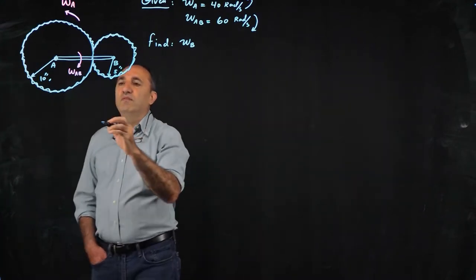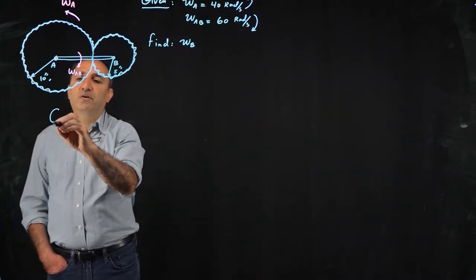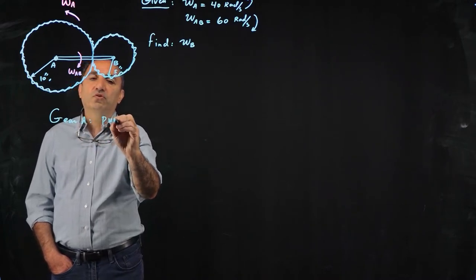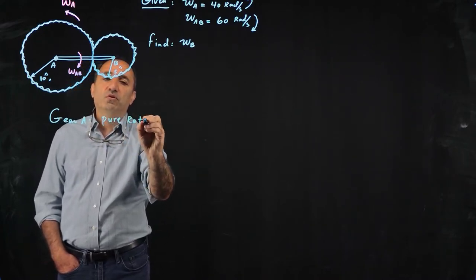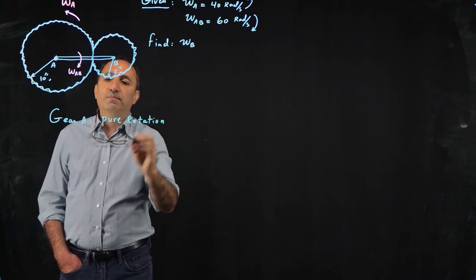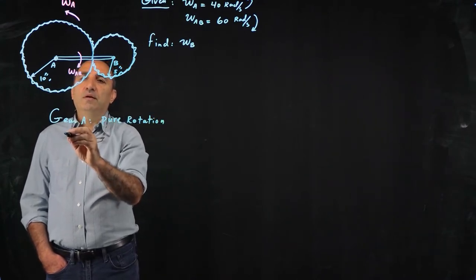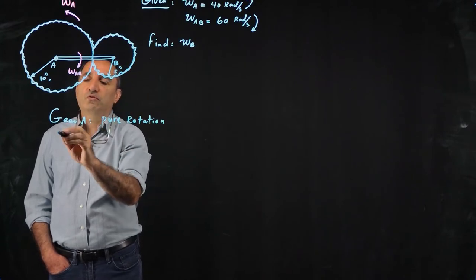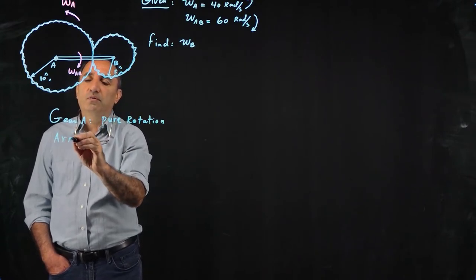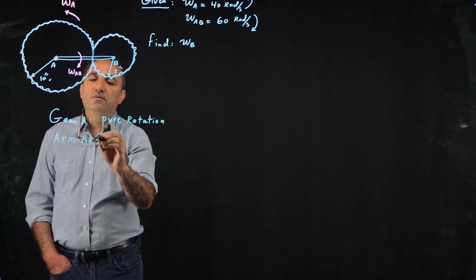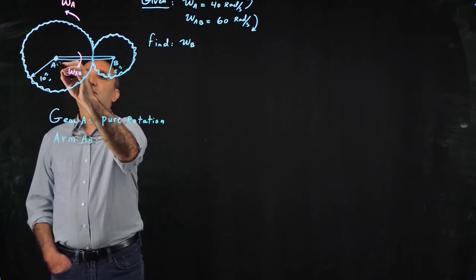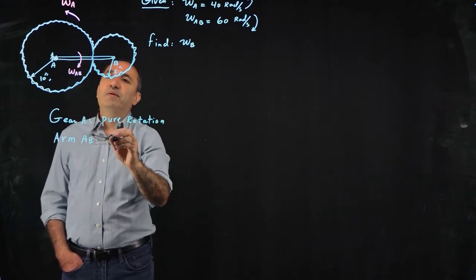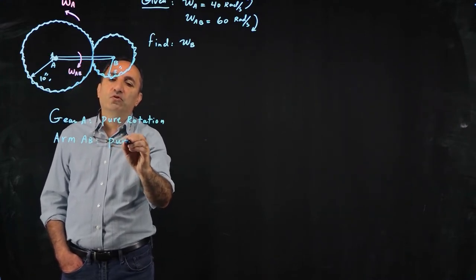If we classify the motion of these gears, gear A has pure rotational motion. On the other hand, gear B its motion is not pure rotational. Let's talk about arm AB or rod AB. AB is also fixed here at A, if I could put a pivot point here for you, its motion is also pure rotation.